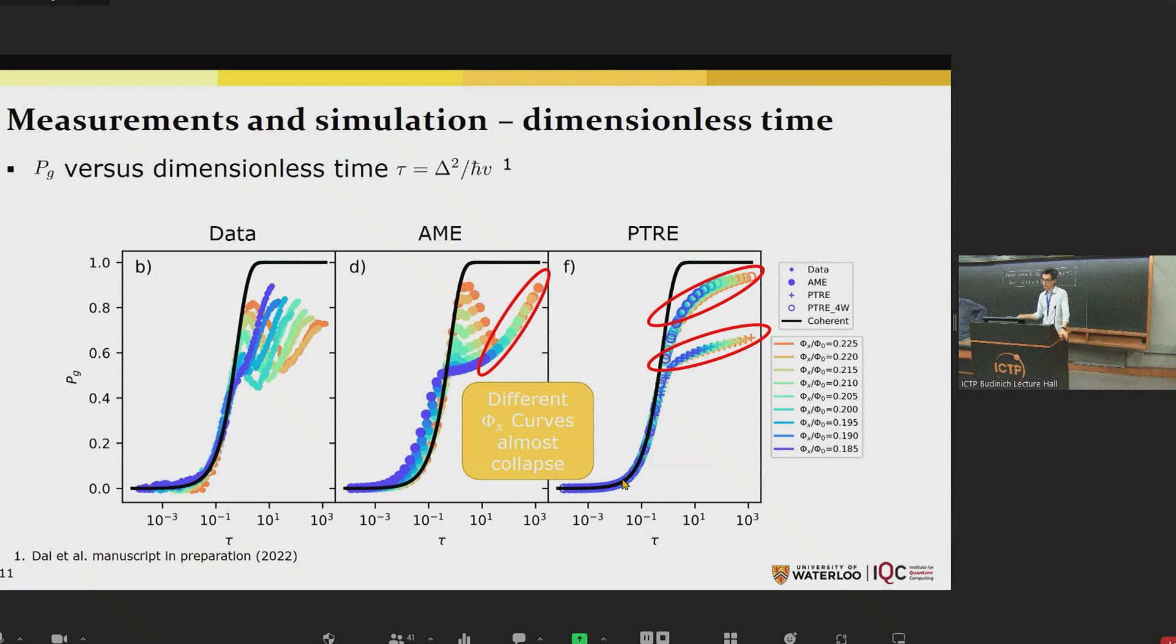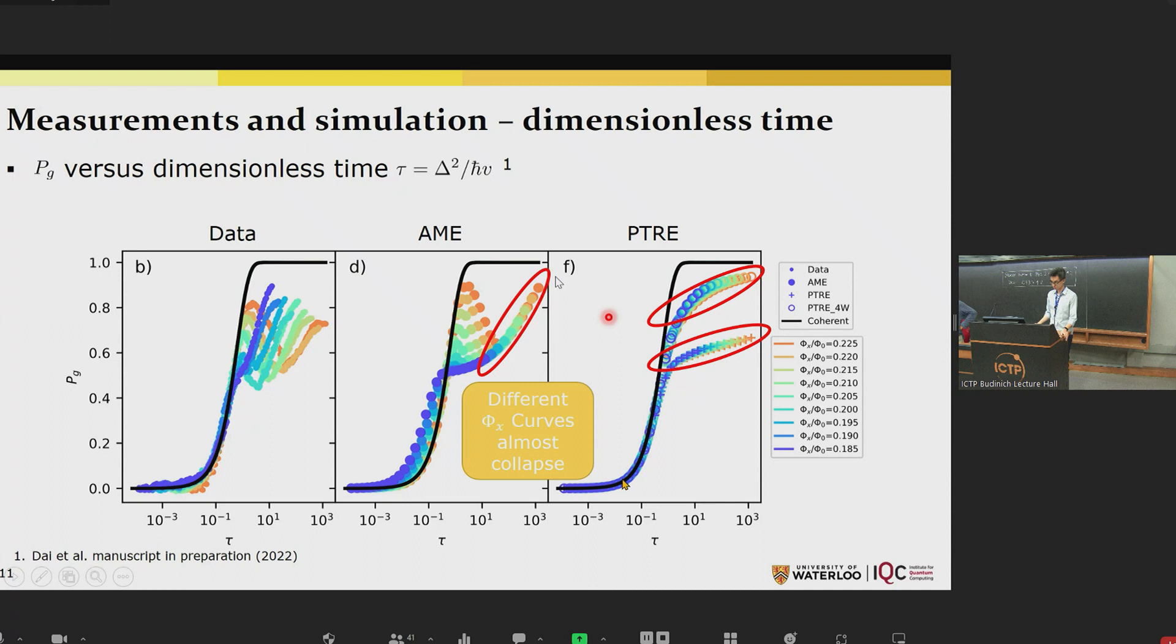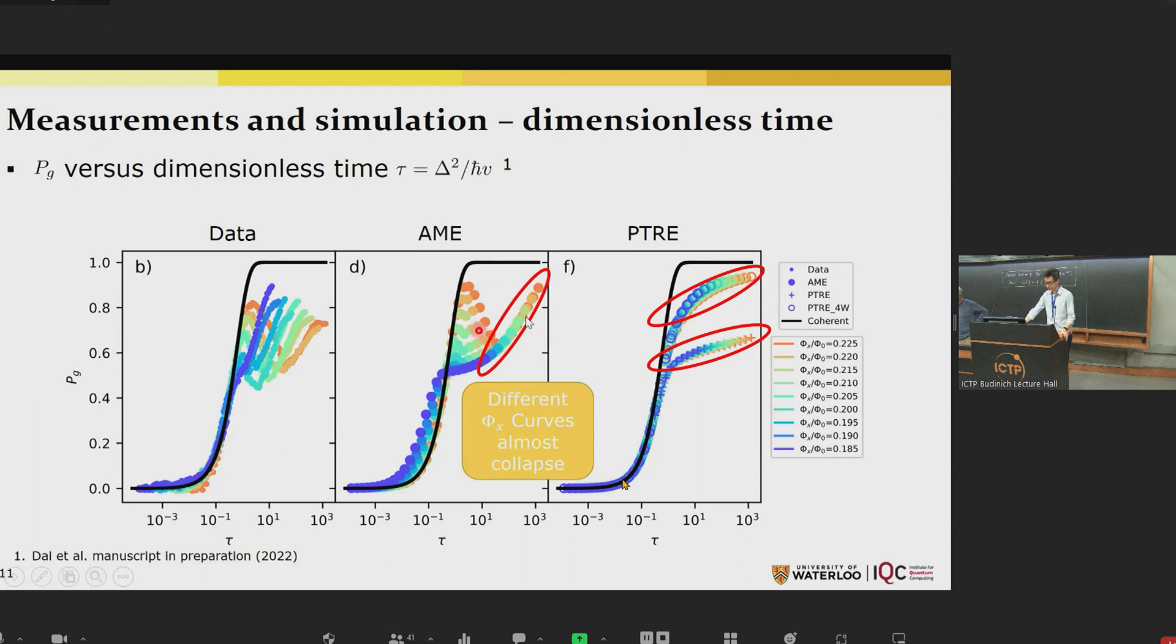Finally, we can also compare the data and the two models, the AME and the PTRE, by plotting our results versus dimensionless time tau. We can observe some additional features, which is that whether in the AME or the PTRE model, we see these different curves for different phi-x almost collapse at long times. Whereas in our data, it kind of interpolates the AME result in the large phi-x limit to the PTRE result in the small phi-x limit.